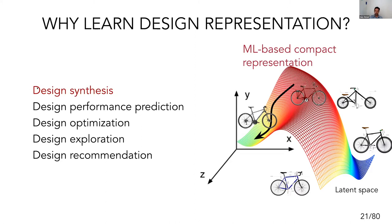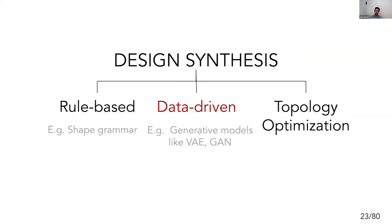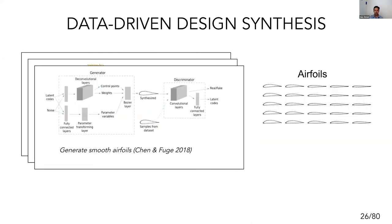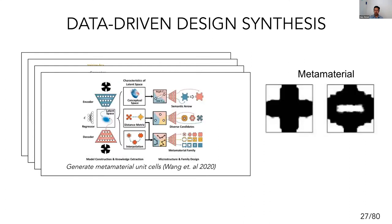Today we'll talk about design synthesis — creating a new product. Design synthesis has traditionally been done using rule-based, data-driven, and topology optimization methods. We'll mostly focus on data-driven methods, which essentially learn from a huge collection of existing designs and try to create new products. These methods have recently gained a lot of traction and have been used to generate aesthetic car images, aircraft models, airfoils, and metamaterials which can be used to create new physical properties.